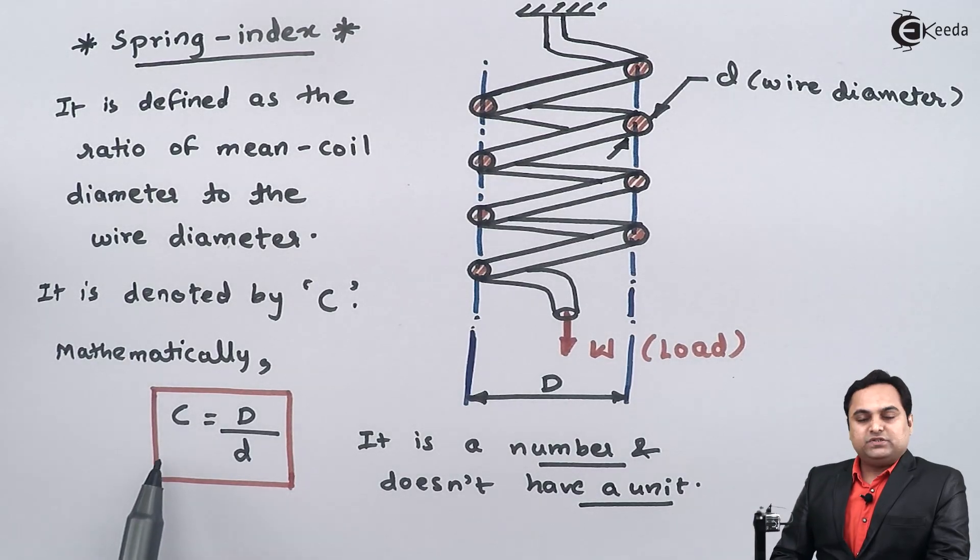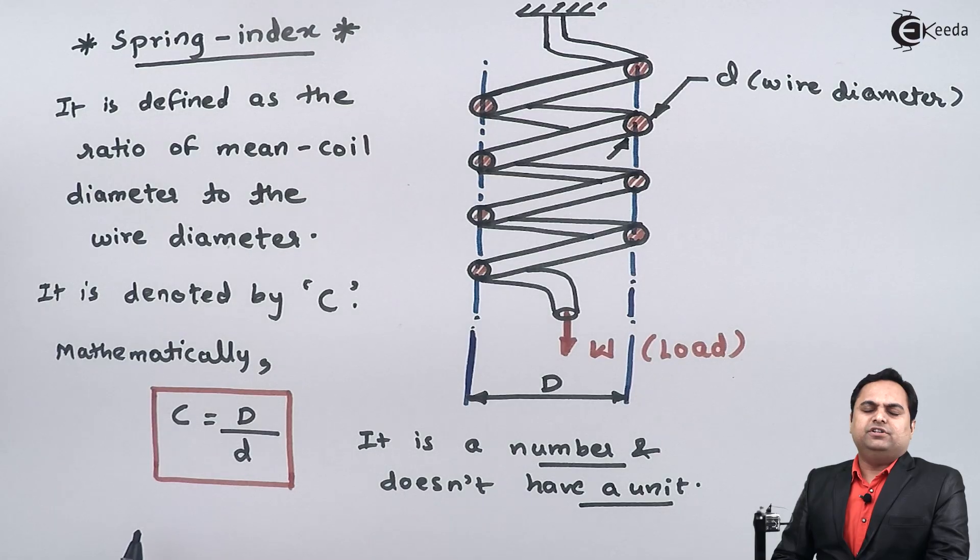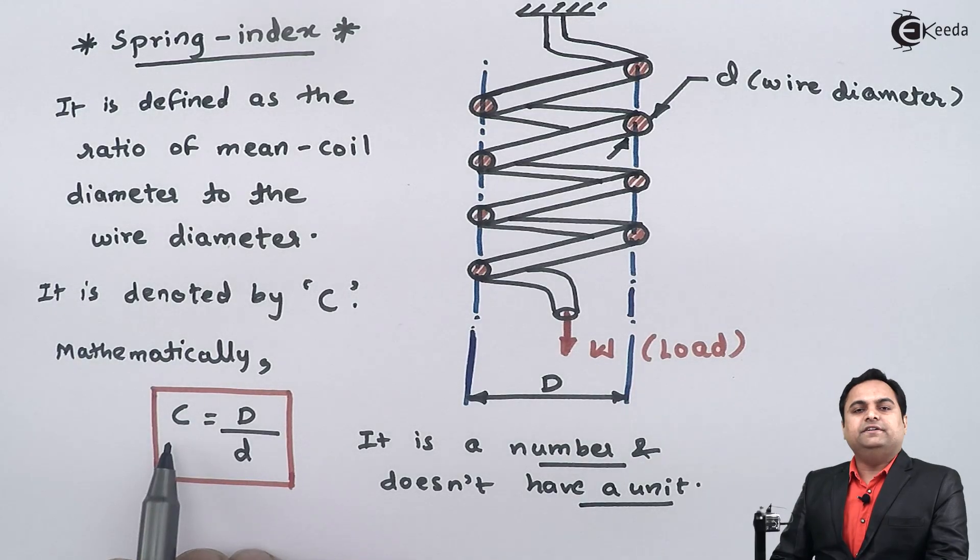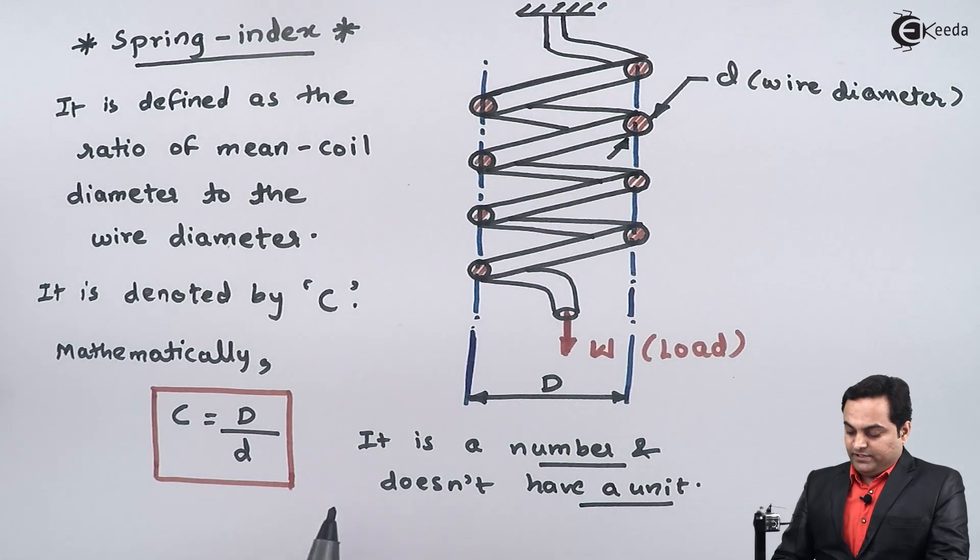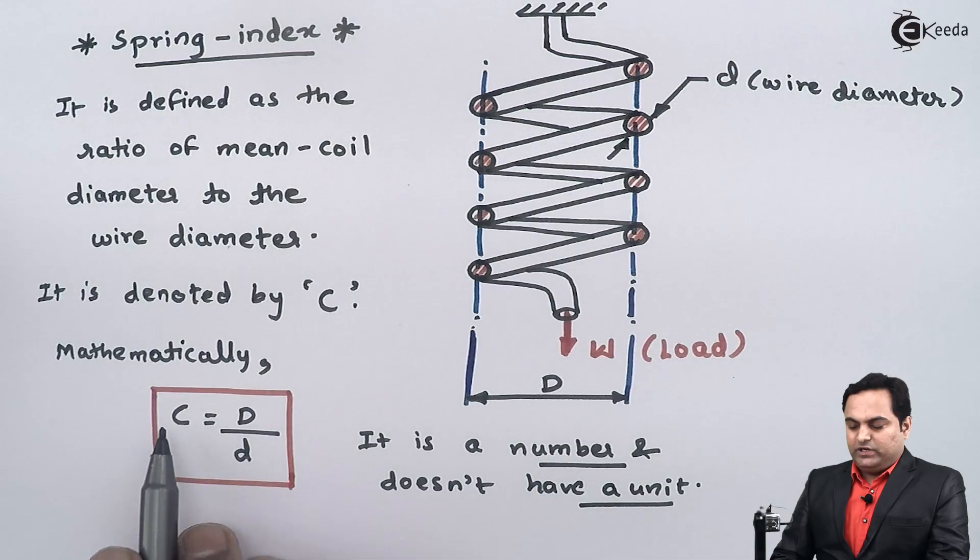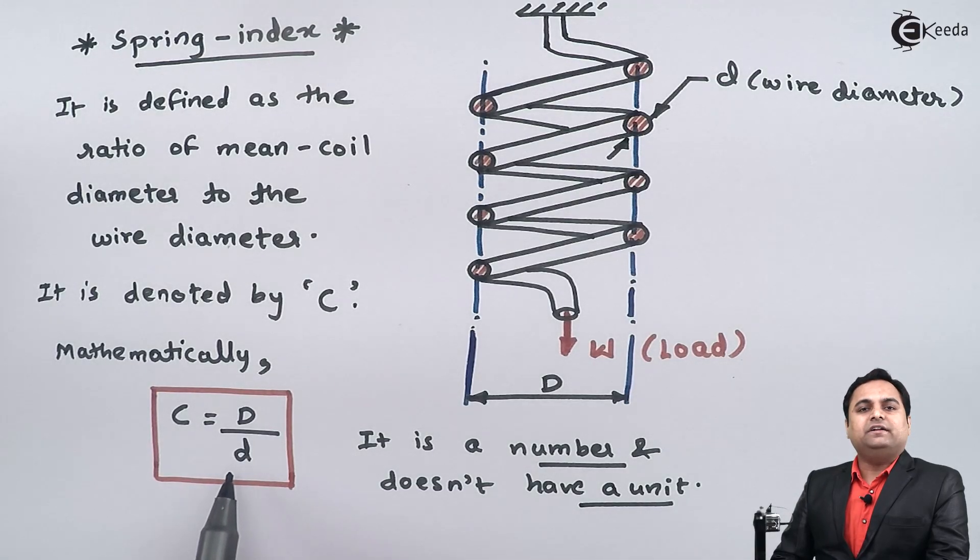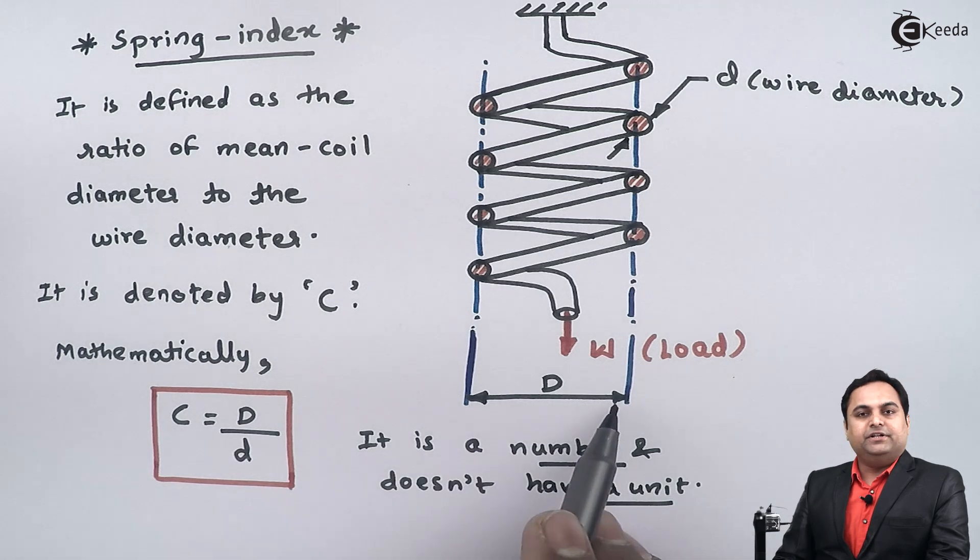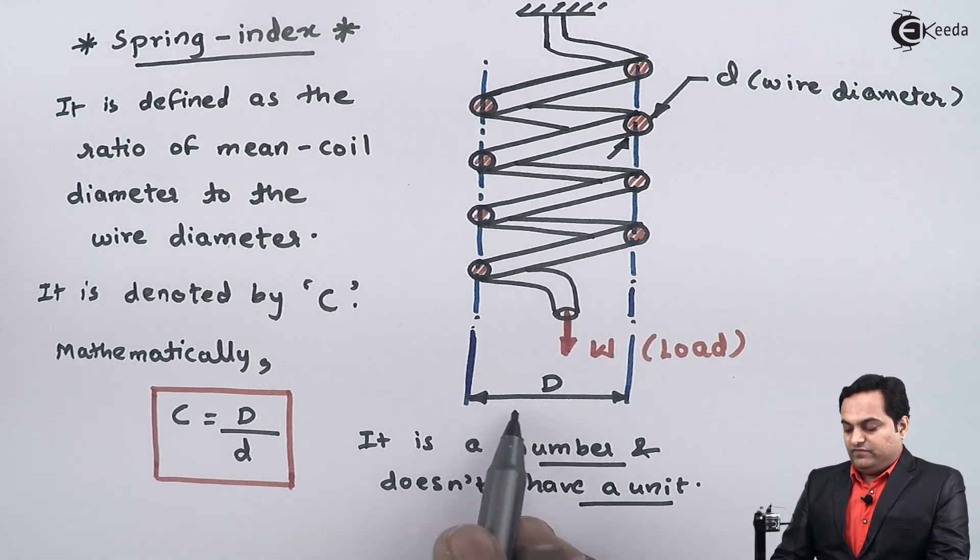This spring index value is positive and can range from 3 to 10. We can select the value of spring index anywhere between 3 and 10. If we know the wire diameter, we can calculate the mean coil diameter with the help of spring index.